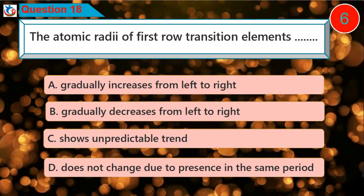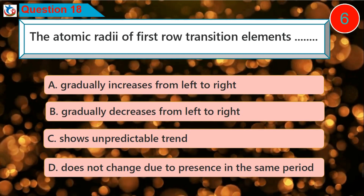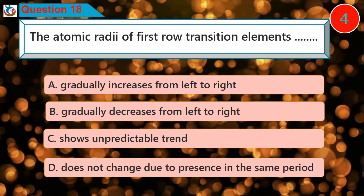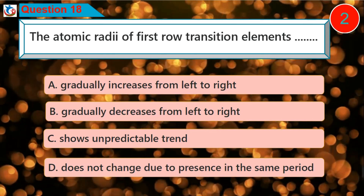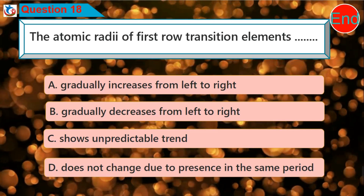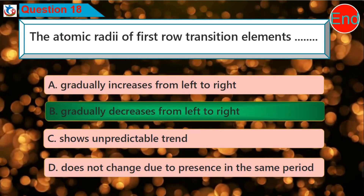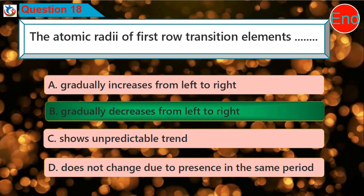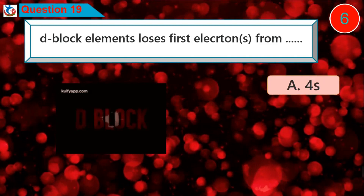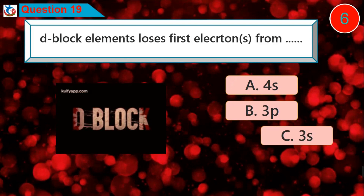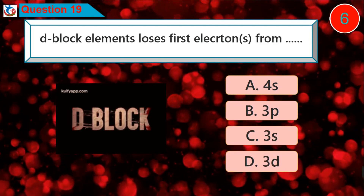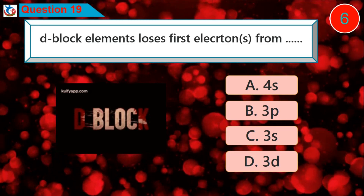Question 19: The d-block elements lose first electrons from — A. 4s, B. 3p, C. 3s, D. 3d.